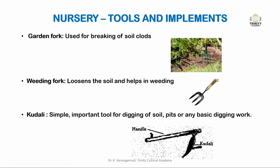The first one is the garden fork, used for breaking soil clods during nursery bed preparation. The second one is the weeding fork, which loosens the soil and helps in the weeding process. It is more or less similar to the garden fork but smaller in size.